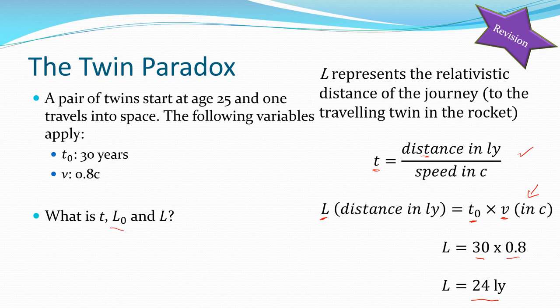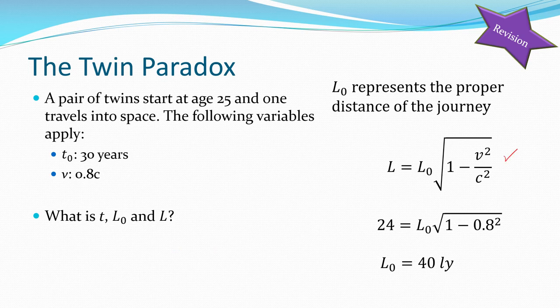To work out the proper length, we use the length contraction equation. The relativistic length l is 24 light years and the velocity is 0.8c — both parties agree on that. Plugging those in, the proper length l naught comes out as 40 light years — that is the proper distance that the traveling twin traveled.